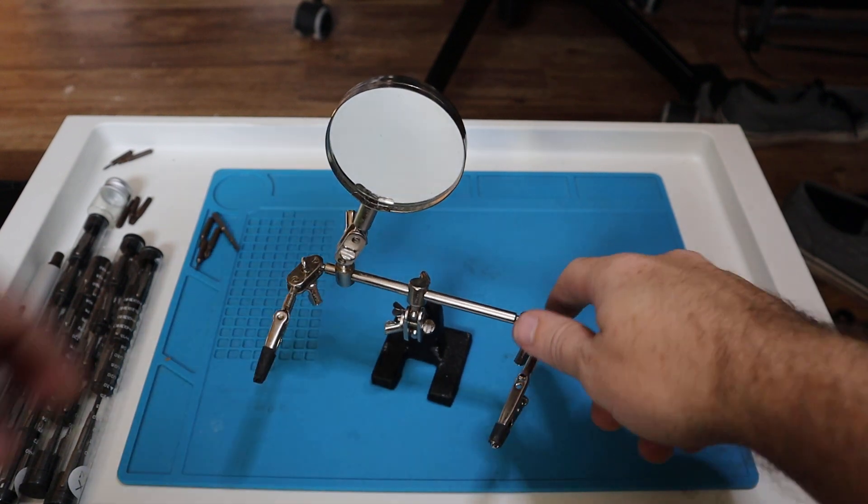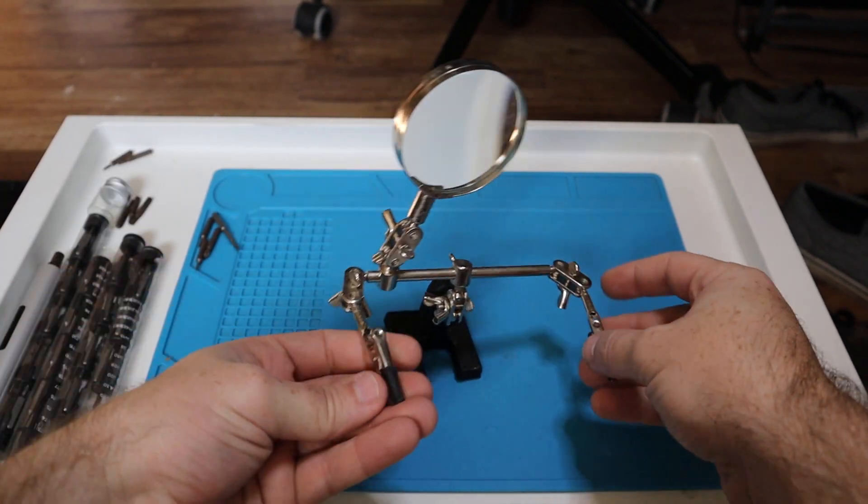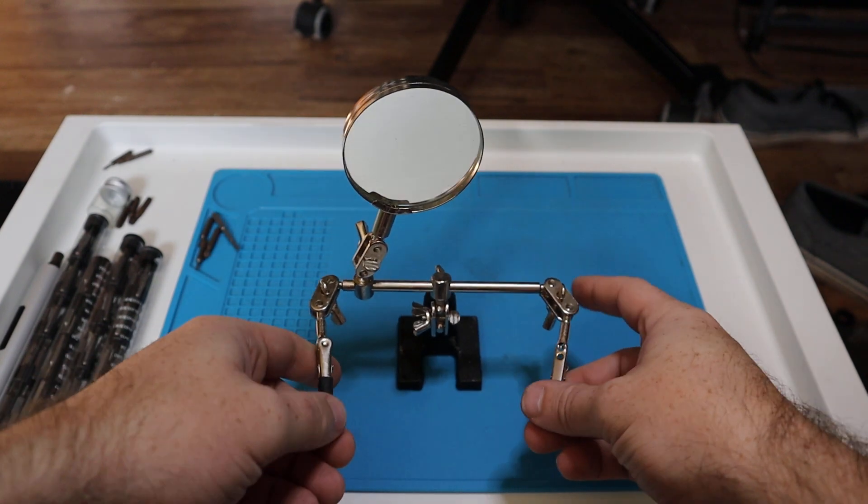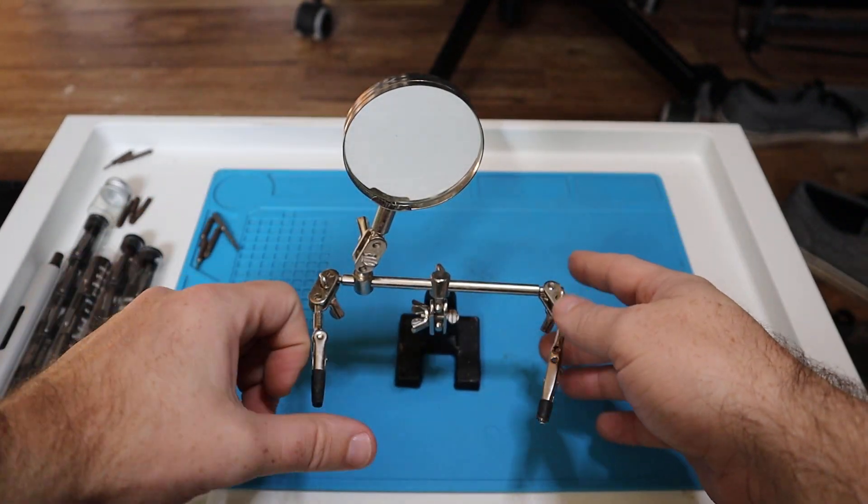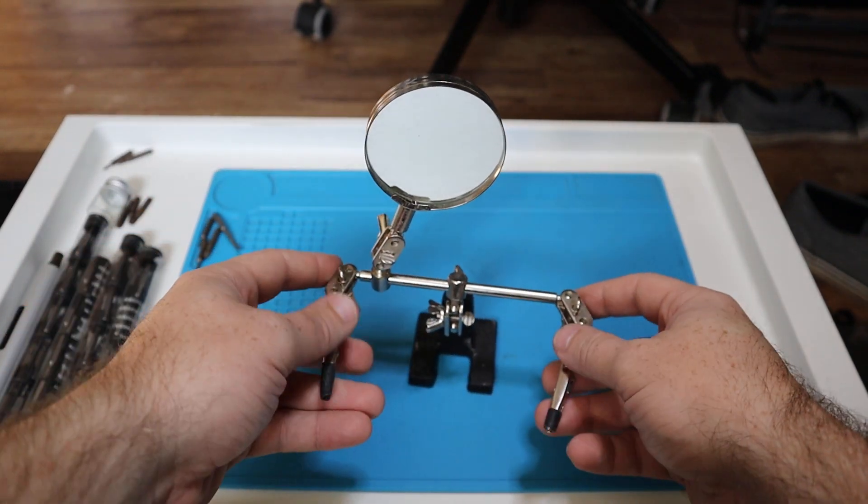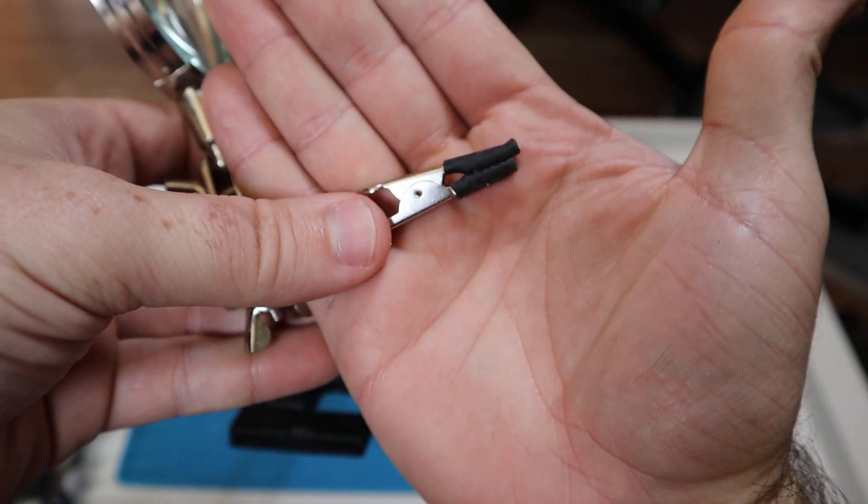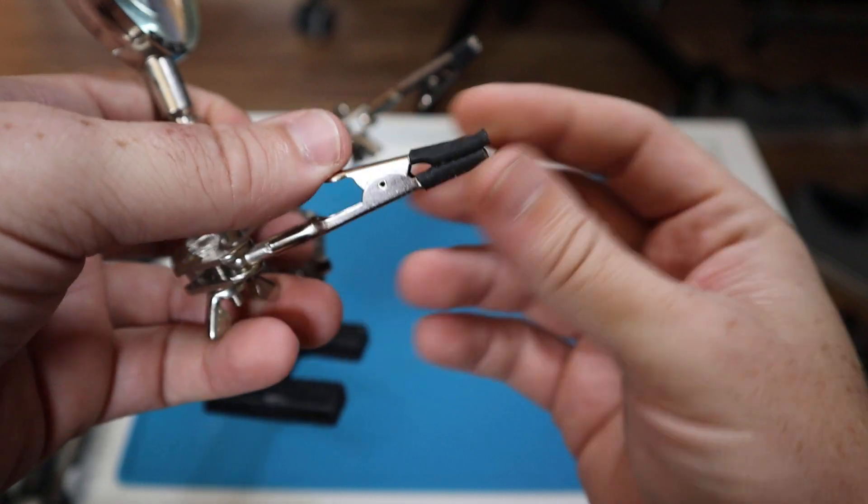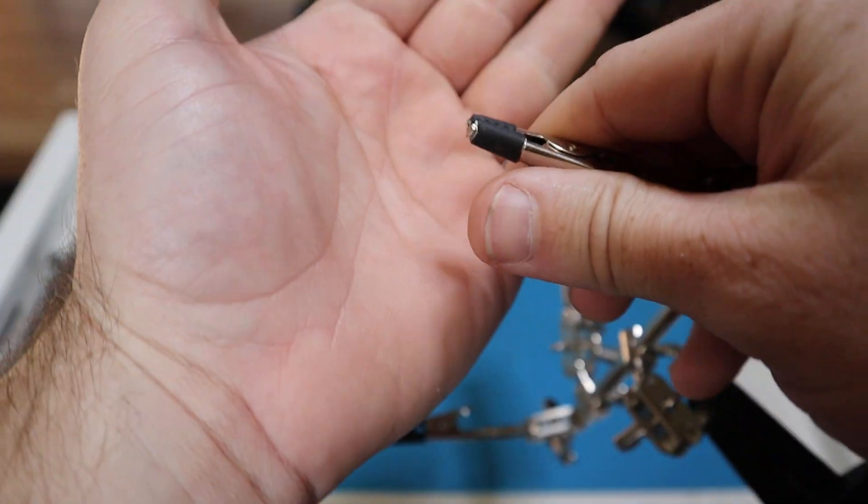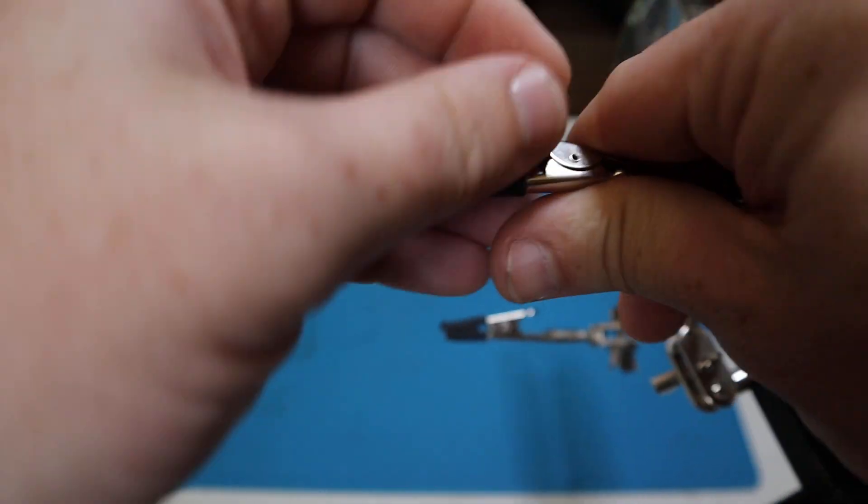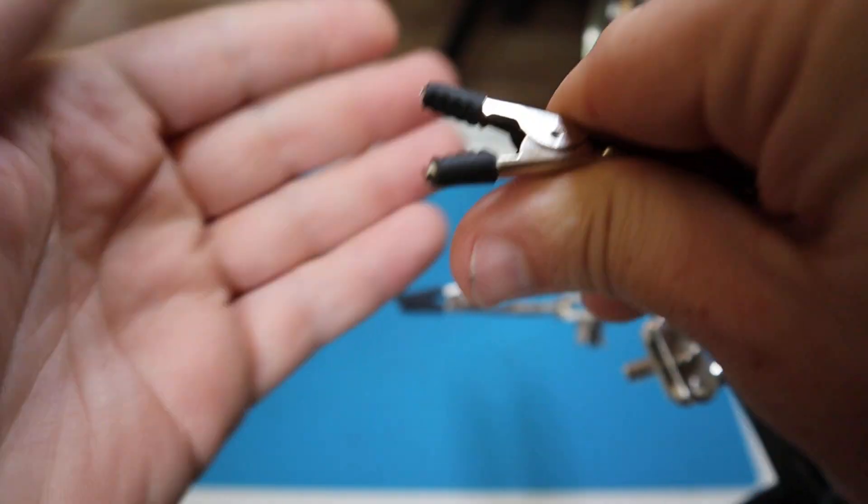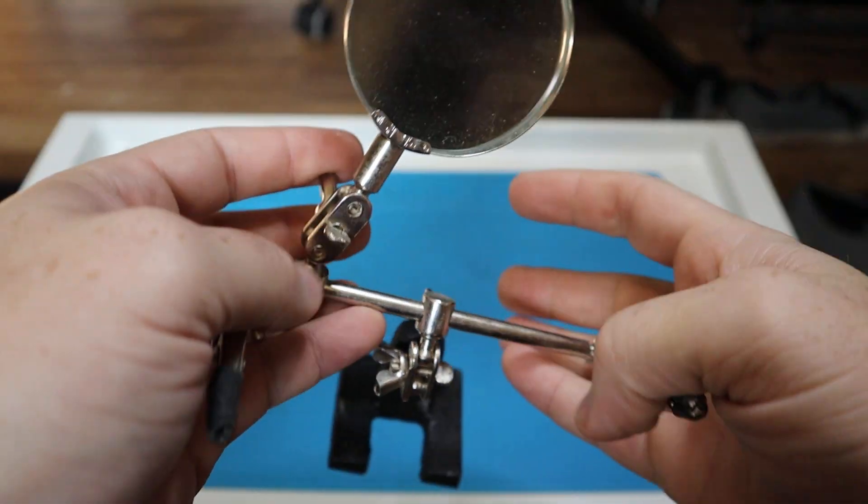All right, so this is the helping hands. I absolutely love this thing. I did a little bit of adjustments to it. These are just supposed to be metal teeth basically on each side, and I put some rubber on them just so it's a little bit gentler.